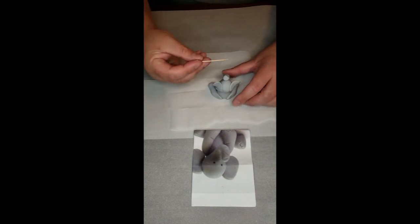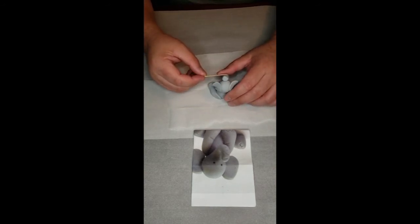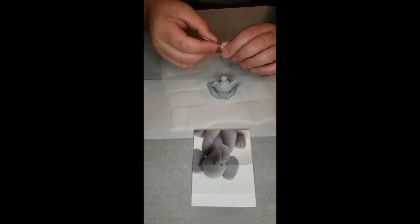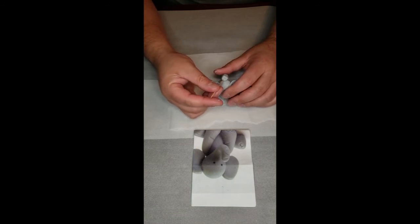Now with the toothpick, I am going to add some lines to the trunk. And I am going to add two little holes.